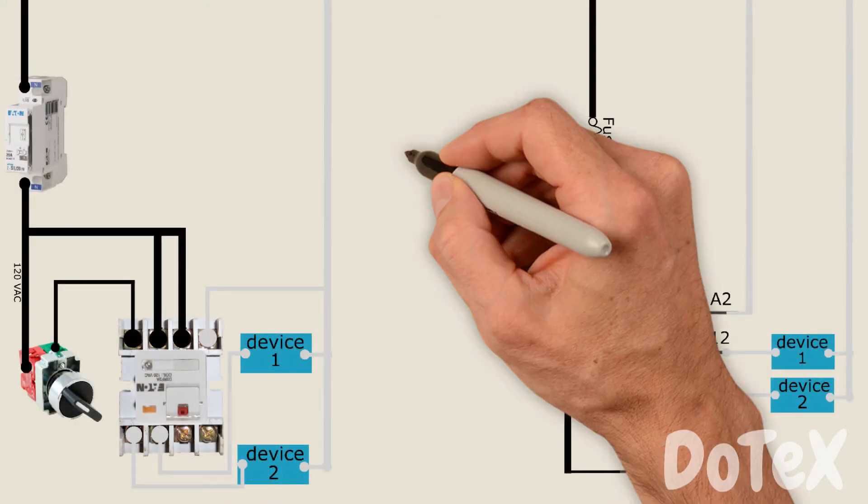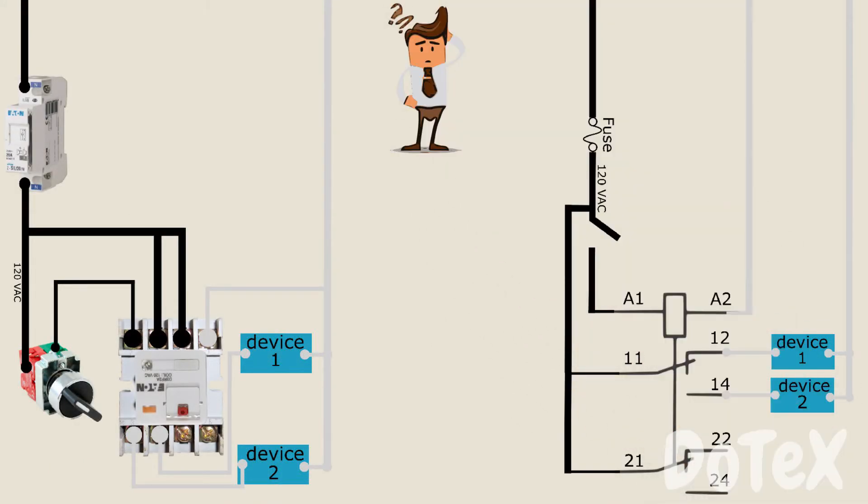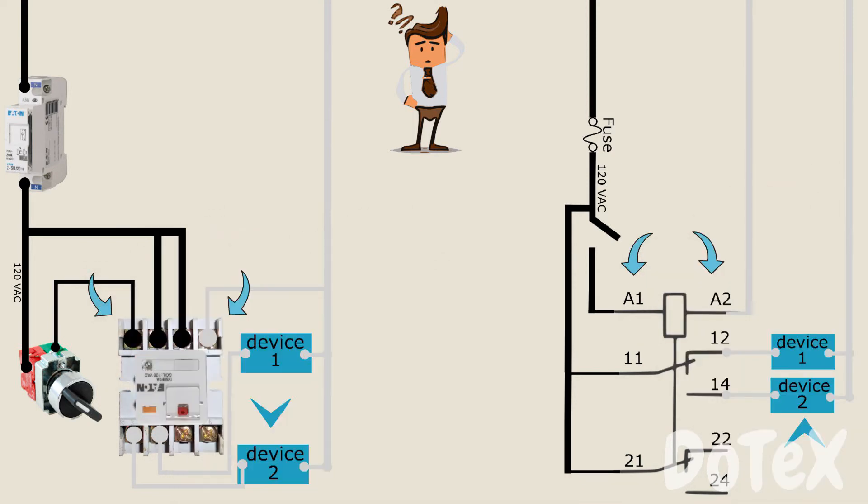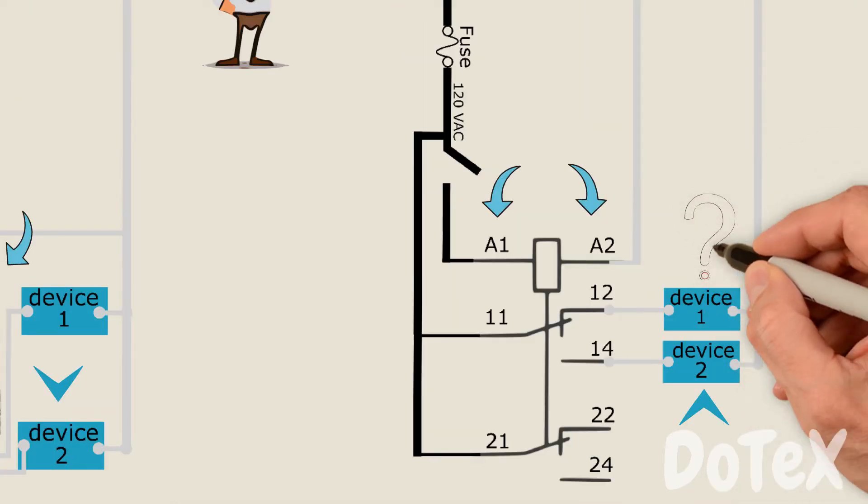Does the short circuit occur in the connected device 2 with the contact 14 of the relay, or in the coil terminals? But wait a minute, why didn't I say the short circuit can be in the connected device 1?